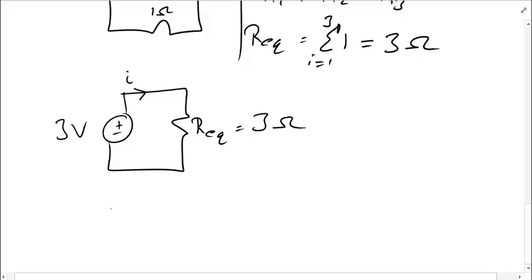So, I can now use Ohm's law directly. V is I times REQ. My V is 3 volts, I is unknown, and REQ is 3 ohms. Therefore, I is 1 amp.